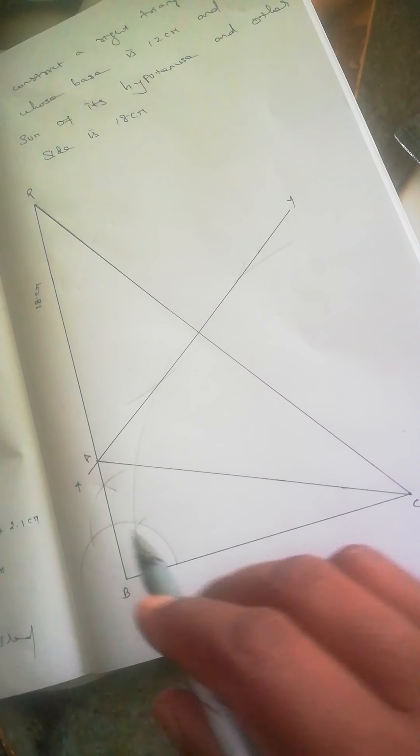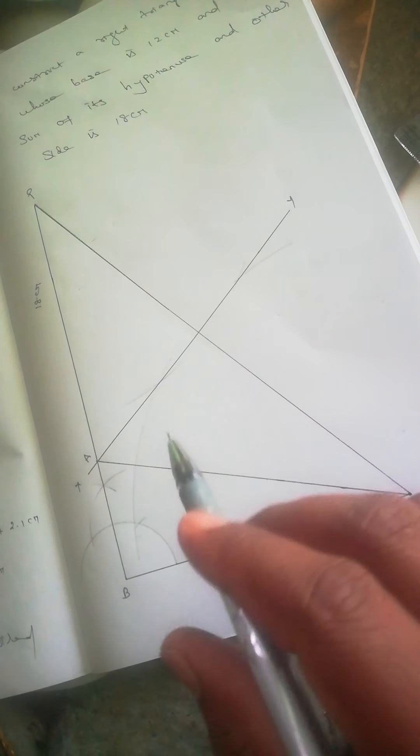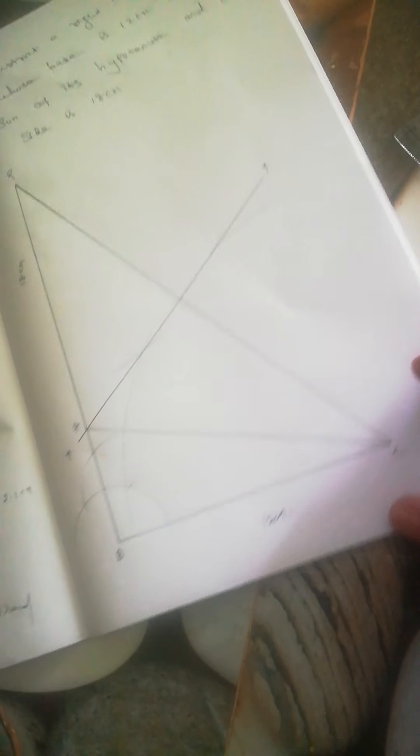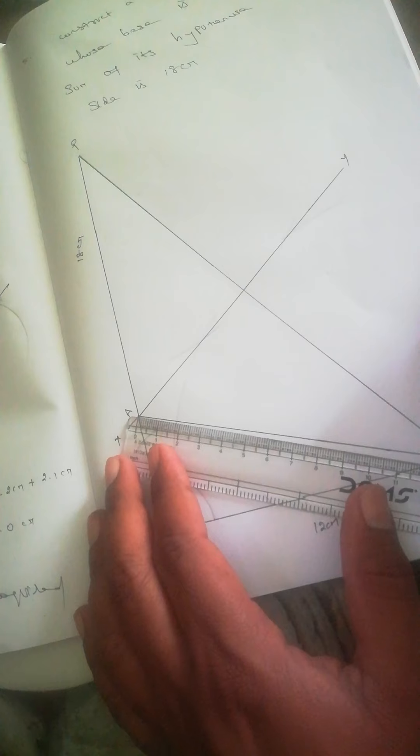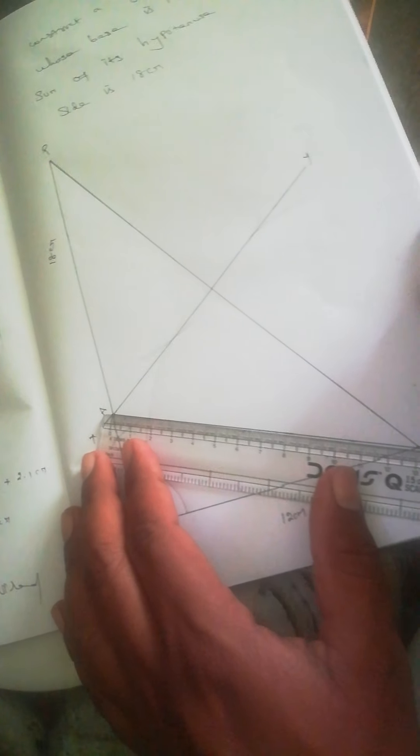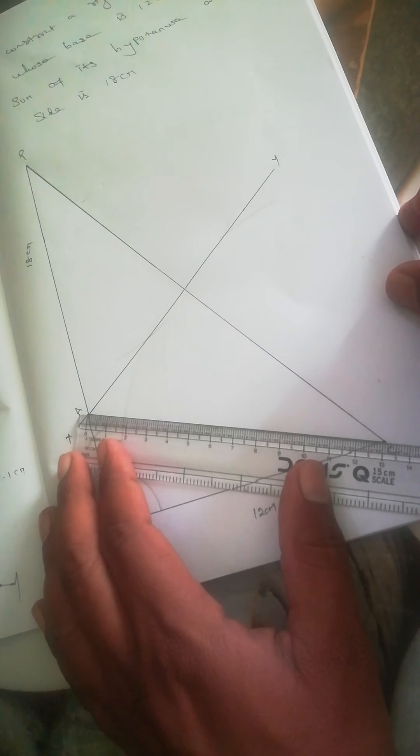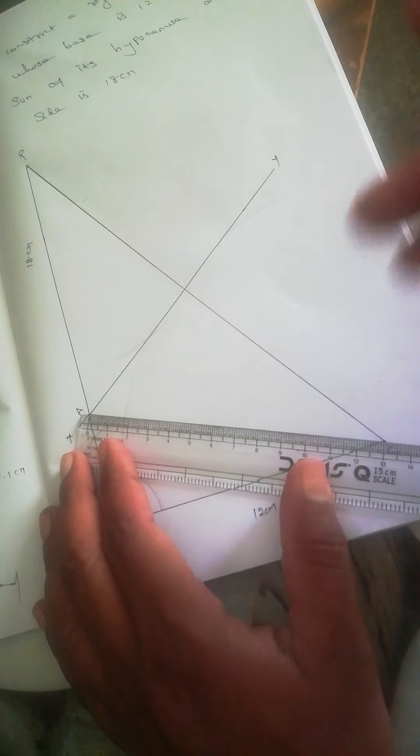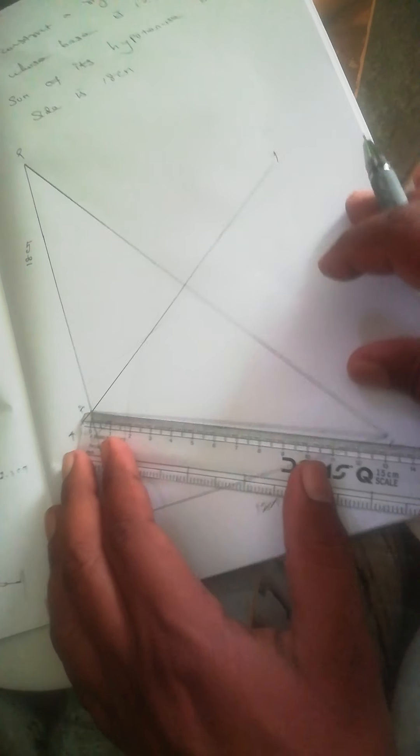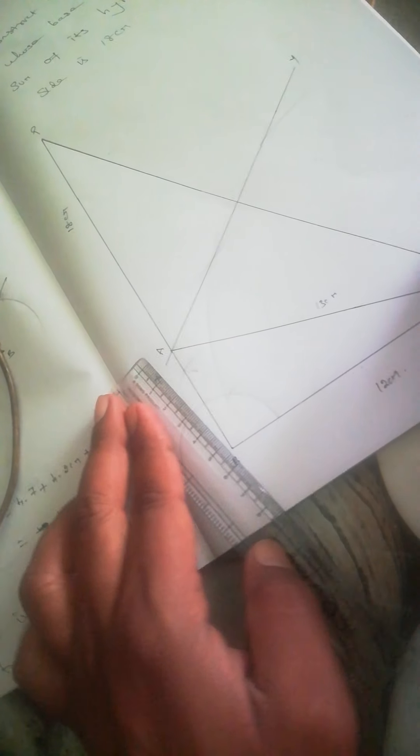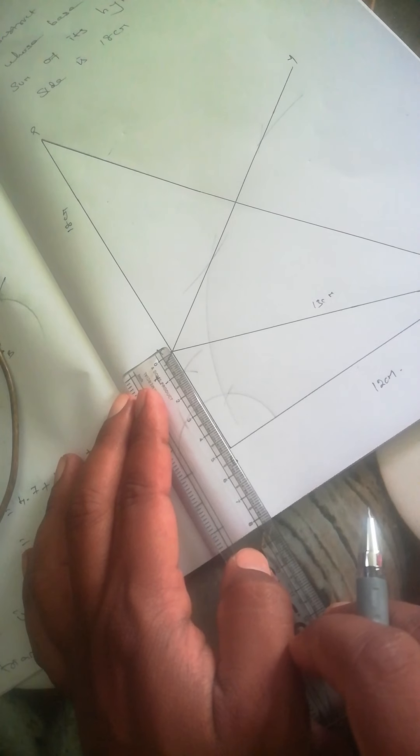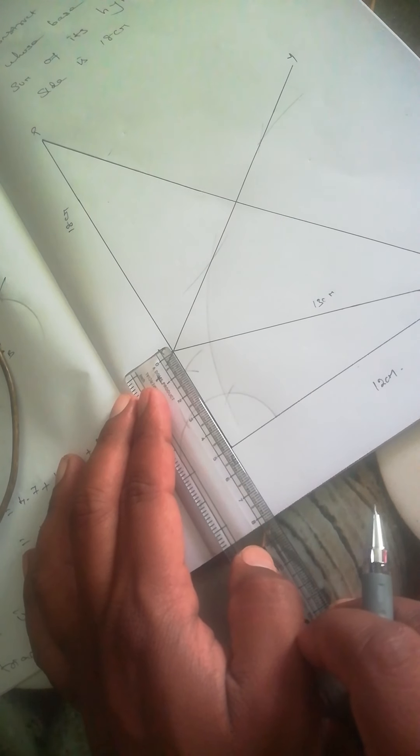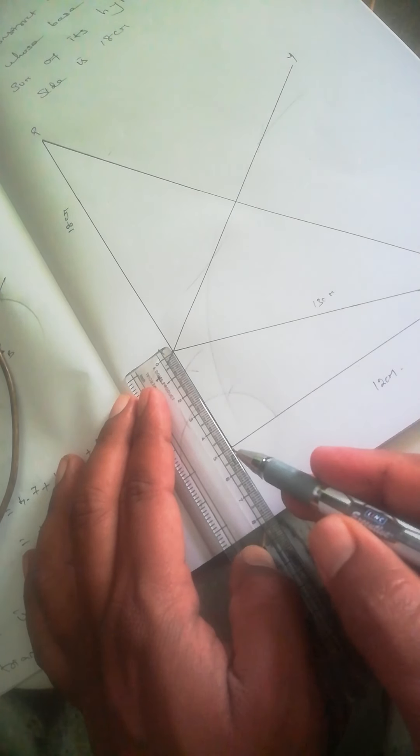Measure AC with a scale to verify—it measures 13 centimeters. You can see here, 13 centimeters. Now measure AB, which is 5 centimeters.